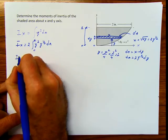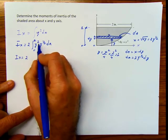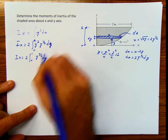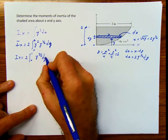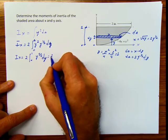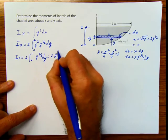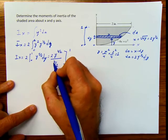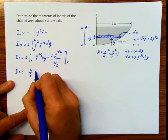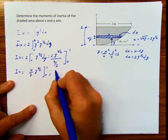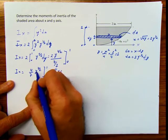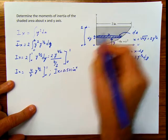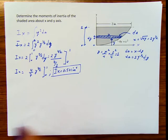Solving this integral: it's 2 times the integral of y to the 5/2 dy from 0 to 1. Integrating gives 2 times y to the 7/2 divided by 7/2, evaluated from 0 to 1, which equals 4/7 times y to the 7/2 from 0 to 1. Plugging in 1 gives just 4/7, which is 0.571 inches to the fourth. Remember the units: inches to the fourth. That is the moment of inertia with respect to x.